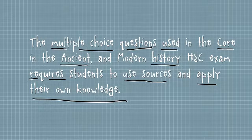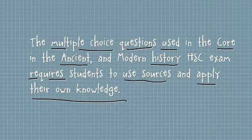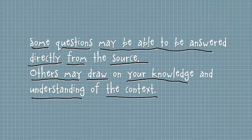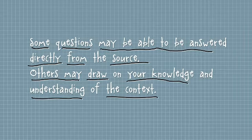Remember that in ancient history and modern history, the multiple choice questions will ask you to use the sources and your own knowledge. All of the questions in this section can do that — the short response as well as the multiple choice. Some multiple choice questions can be answered directly from the source, some require knowledge of the context, and some may require you to consider information from more than one source. So don't rush through this section. Use your five minutes reading time at the beginning of the exam to look at these questions and the sources, so that when you start the paper you'll have had a little preparation.